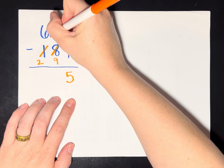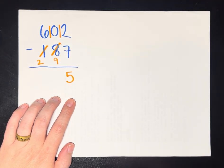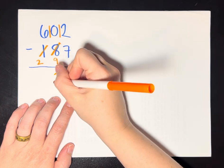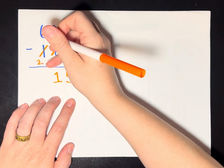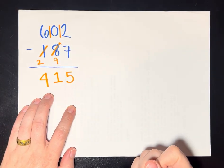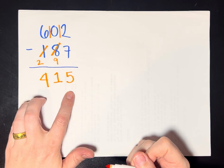And then this number gets that extra 10. And so now I can take 9 away from 10, and I get a 1. And then finally, I can take 2 away from 6 in the 100s place and get a 4. So 415 is my answer.